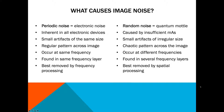Periodic noise is the same as electronic noise. It's inherent in all electronic devices. What makes it easy for the computer to understand is that the small artifacts are the same size, occurring in a regular pattern across the image — they occur at the same frequency and are found in the same frequency layer. So those are best removed by a frequency processing filter, and they're actually very easy to remove using a frequency domain processing operation.